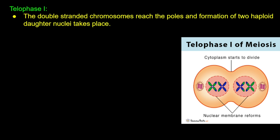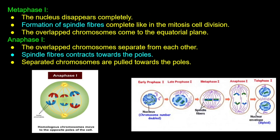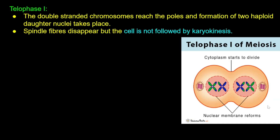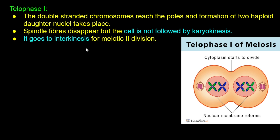Next is Telophase first. The chromosomes reach the poles and formation of two haploid daughter nuclei takes place. Two haploid daughter nuclei are formed. Spindle fibers disappear. The cell then goes into interkinesis — a resting phase between meiotic first and meiotic second division.